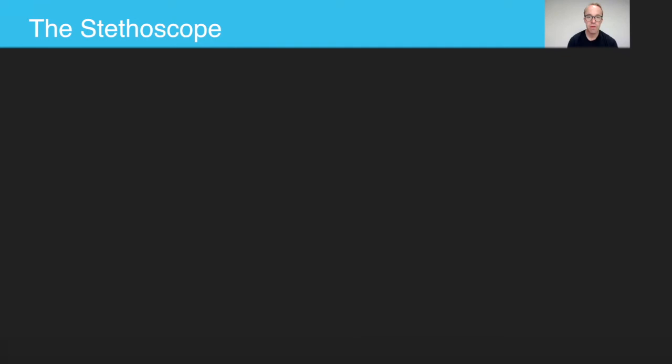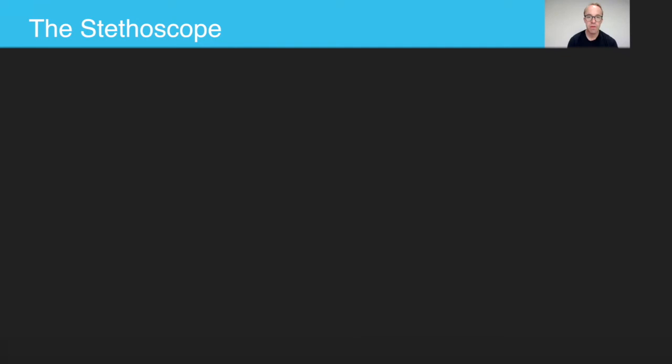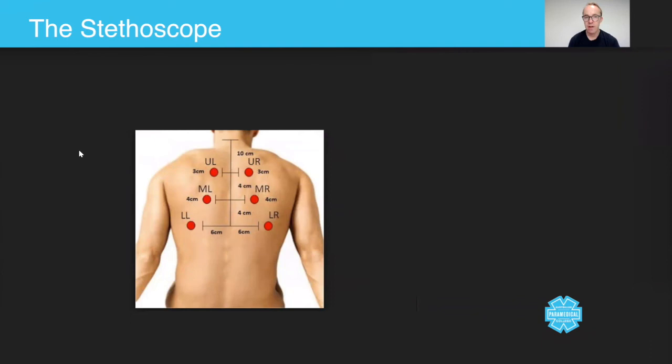Now, chest auscultation is something you will do in some detail in the workshop. But basically what you're doing is you're comparing left to right and you're listening for the different sounds in the lobes. So that's not something we're going to cover in any detail here. And as I've said, you can also listen for the heart sounds, but again, we don't do that in a massive amount of detail because that really is more of an advanced skill.